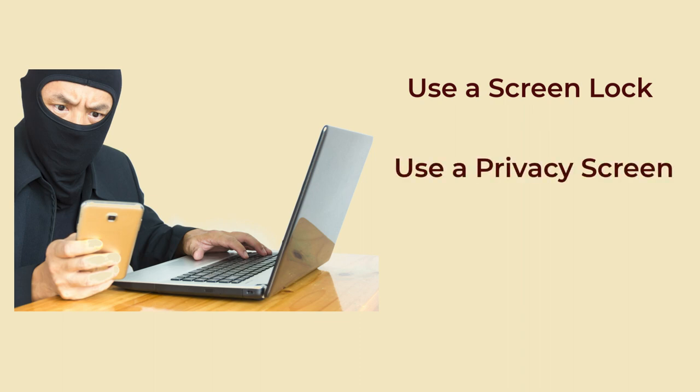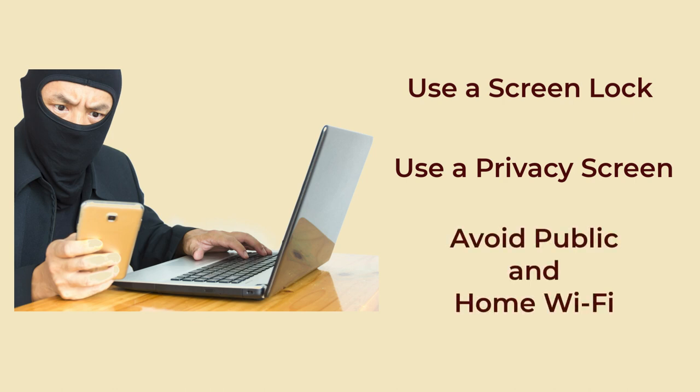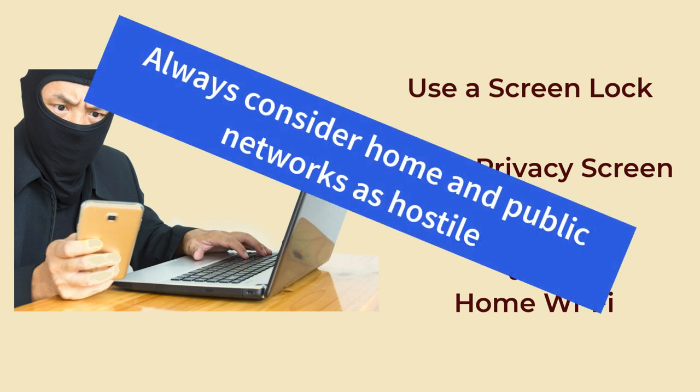Using a privacy screen: for very sensitive data use, a privacy screen can prevent others from seeing your phone's screen. This is especially useful when you are typing passwords or other sensitive information. Organizations should also train their employees to avoid the use of public hotspots. It's also important to limit access to home networks. Home networks, like public networks, should always be considered hostile.